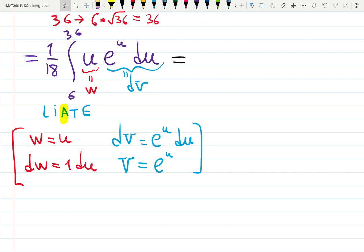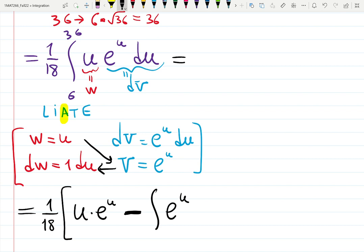We don't change limits of integration for integration by parts—we keep 6 and 36. Integration by parts is not a transformation; we're just calling parts different names. It's 1 over 18, and it will be in huge brackets: w times v is u times e to the u, minus—that's part of the formula—the integral of the product of those two at the bottom, v times dw, which is e to the u du.